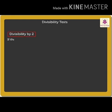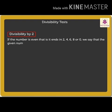First, divisibility by 2. If the number is given and it ends in 2, 4, 6, 8, or 0, we can say that the given number is divisible by 2.